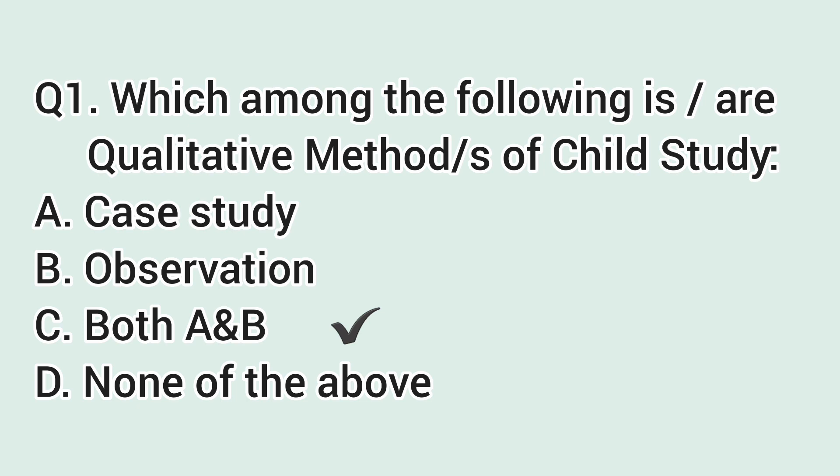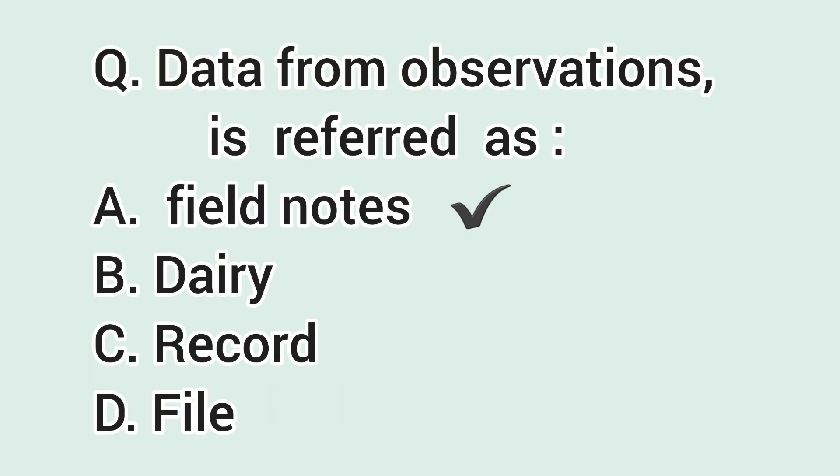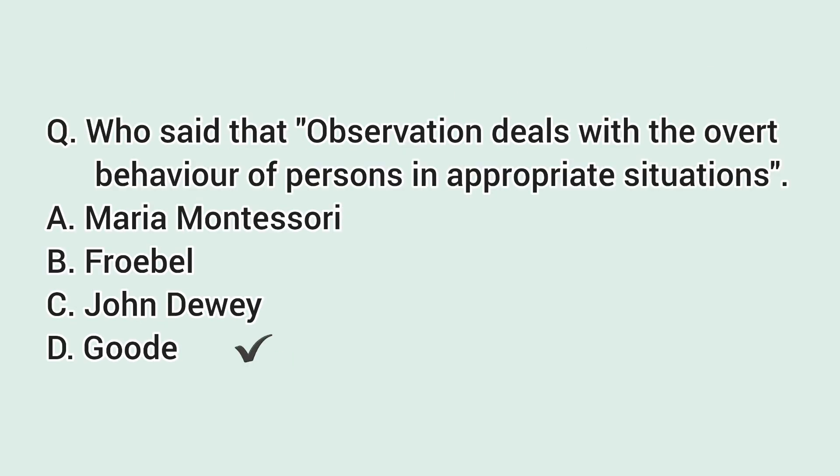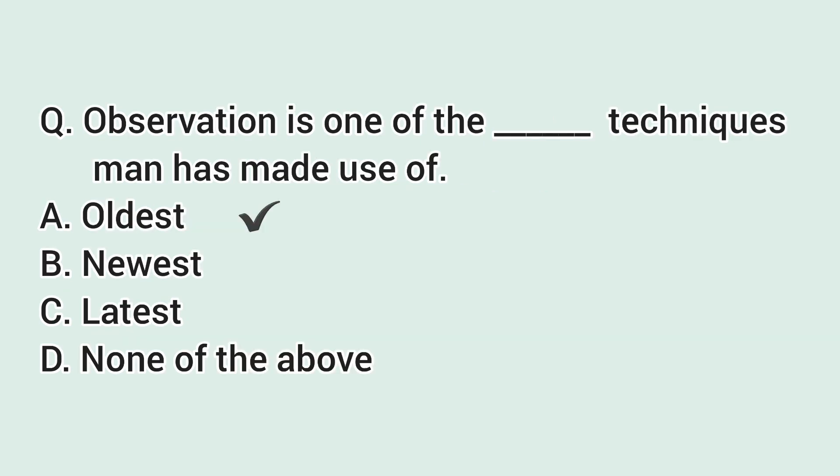Data from observation is referred to as field notes. Who said that observation deals with the behavior of persons in appropriate situations? Observation is one of the oldest techniques man has made use of.